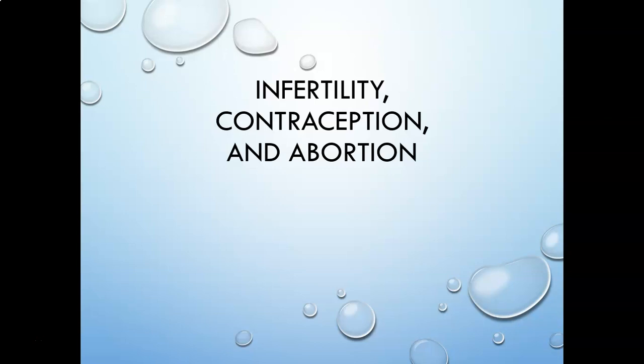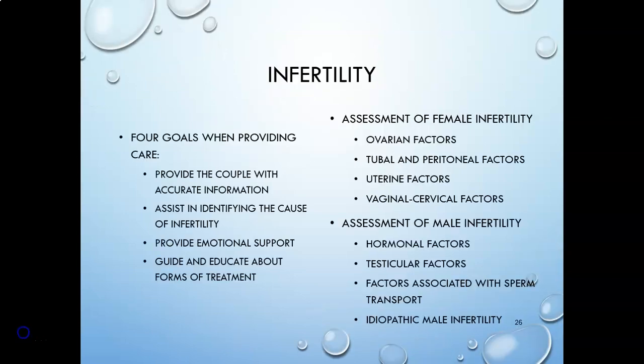When we talk about infertility, this is typically defined as the inability to develop a pregnancy after 12 months of actively pursuing those methods — or not preventing them. Infertility is actually relatively common; it affects about 10 to 15 percent of reproductive-age couples.